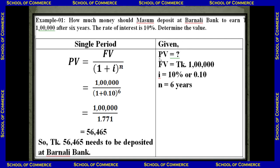Given: PV is unknown. FV equals one lakh. i equals 10 percent, which is 0.10. To convert percentage to decimal in your calculator, type 10, press the division button, then type 100 — the result will be 0.10. n equals six years.